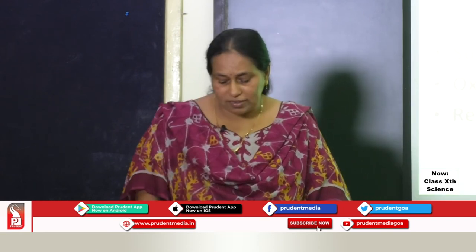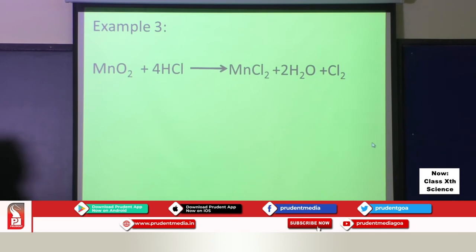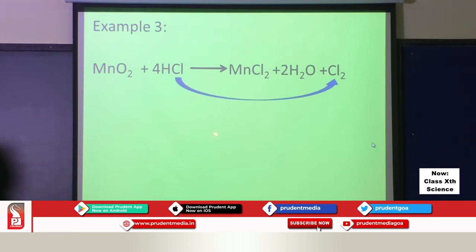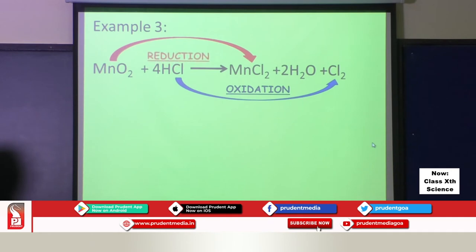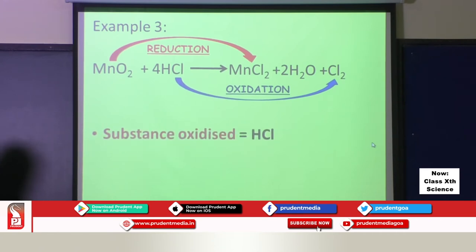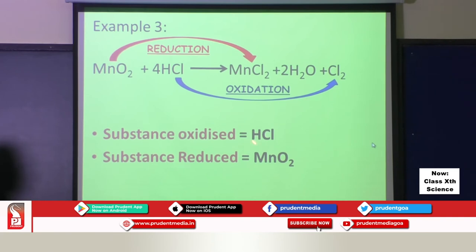Let us learn one more example for the redox reaction. MnO₂ + 4HCl gives MnCl₂ + H₂O + Cl₂. Hydrogen is removed from hydrogen chloride, becoming chlorine — removal of hydrogen is oxidation. So the substance oxidized is HCl. Manganese oxide has removal of oxygen and changes into manganese chloride — that is reduction. So the substance reduced is MnO₂. Therefore, the reducing agent is HCl and the oxidizing agent is MnO₂.